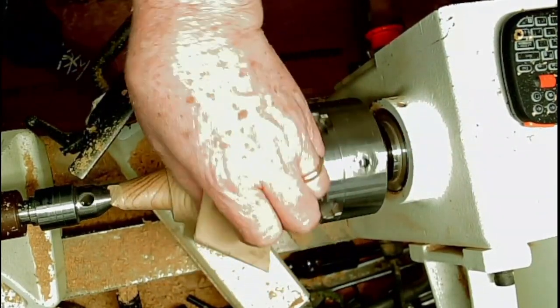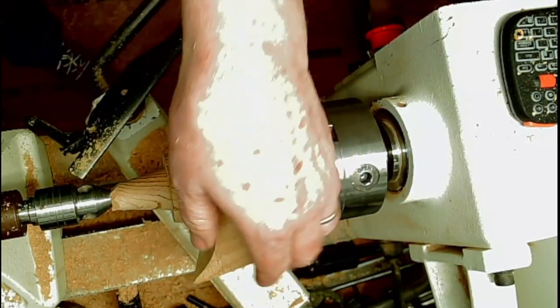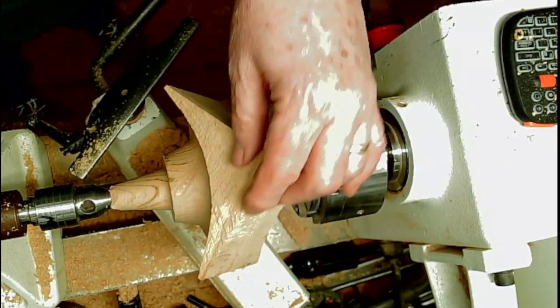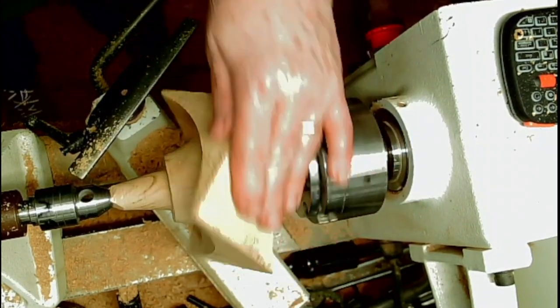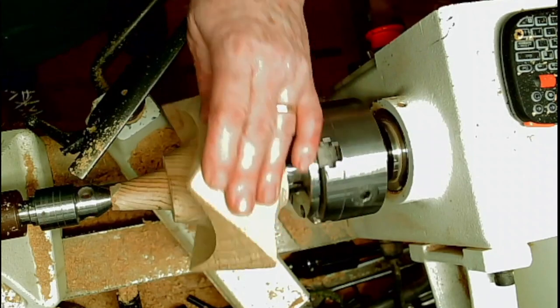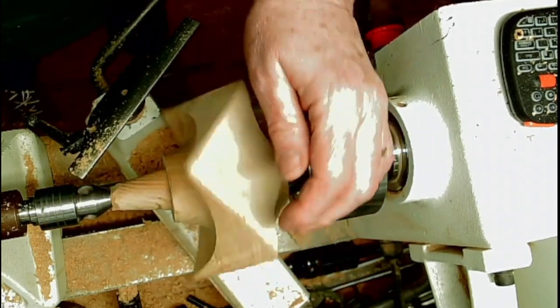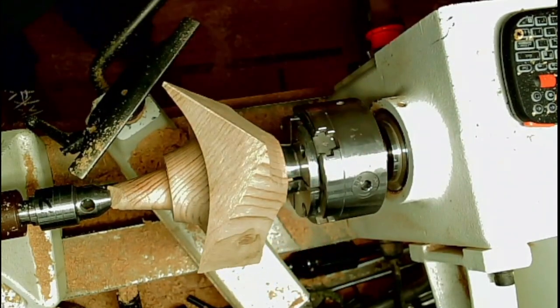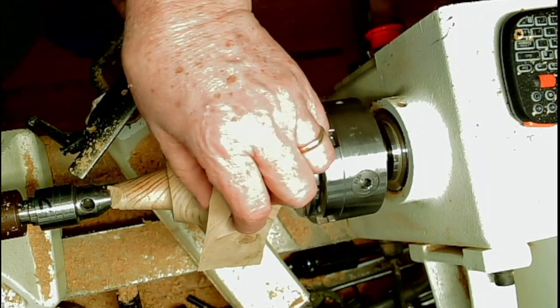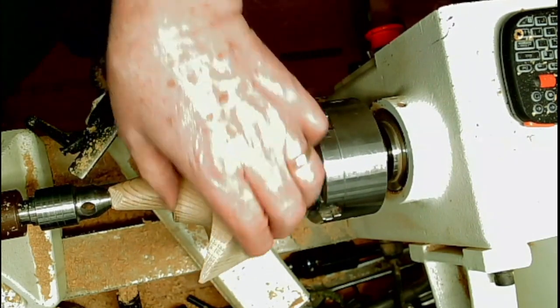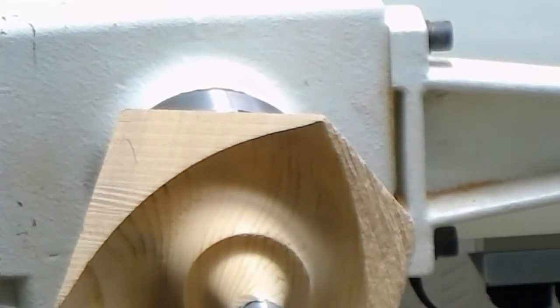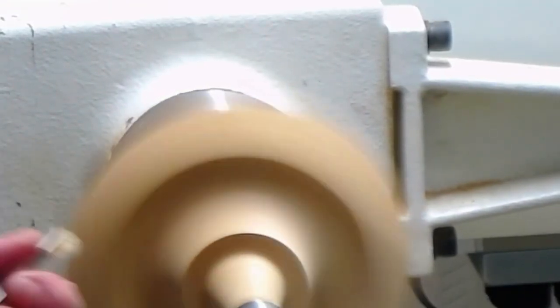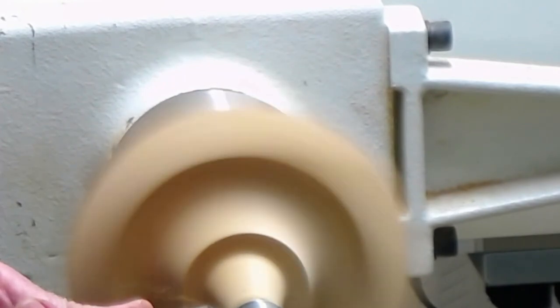You will find when you do these that sandpaper is your friend at the end of the day to actually get the points coped with. I've got a couple of bricks I use at home that are quite good for that, because these types of bowls do require quite a lot of love after the event, quite a lot of sanding to get them the way that you want them.